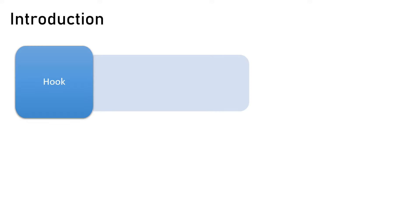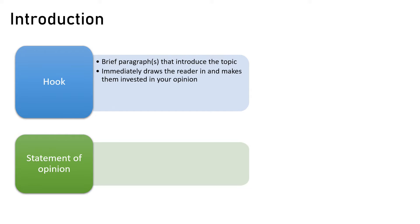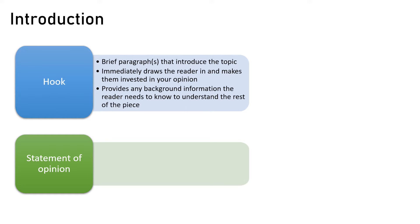An introduction to an opinion essay usually consists of two parts: a hook and a statement of opinion. The hook should consist of one or more paragraphs that introduce the topic in an engaging way, drawing the reader in and making them invested in your opinion. It should show that you have a unique perspective or experience that makes your opinion particularly interesting, and the hook should provide any background information the reader needs to know to understand the rest of the piece.